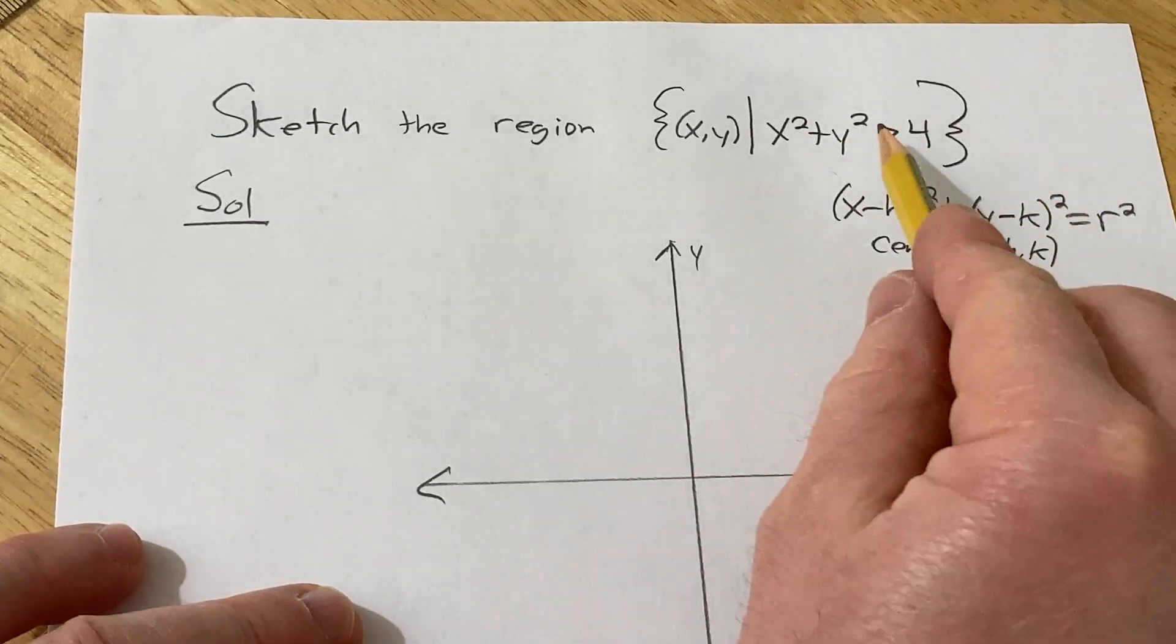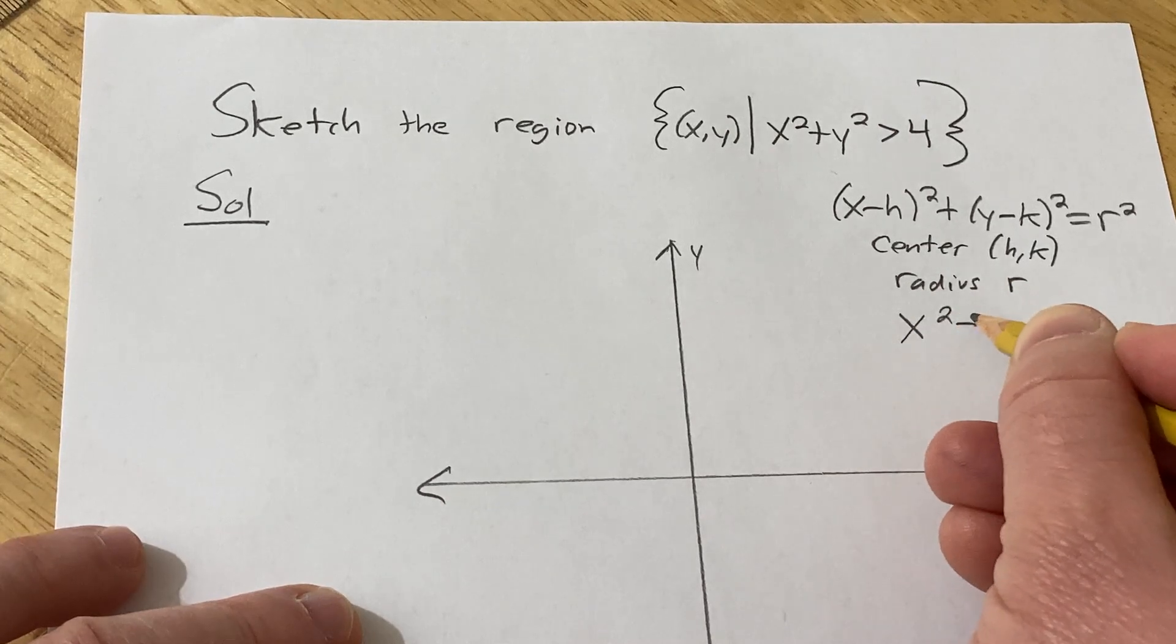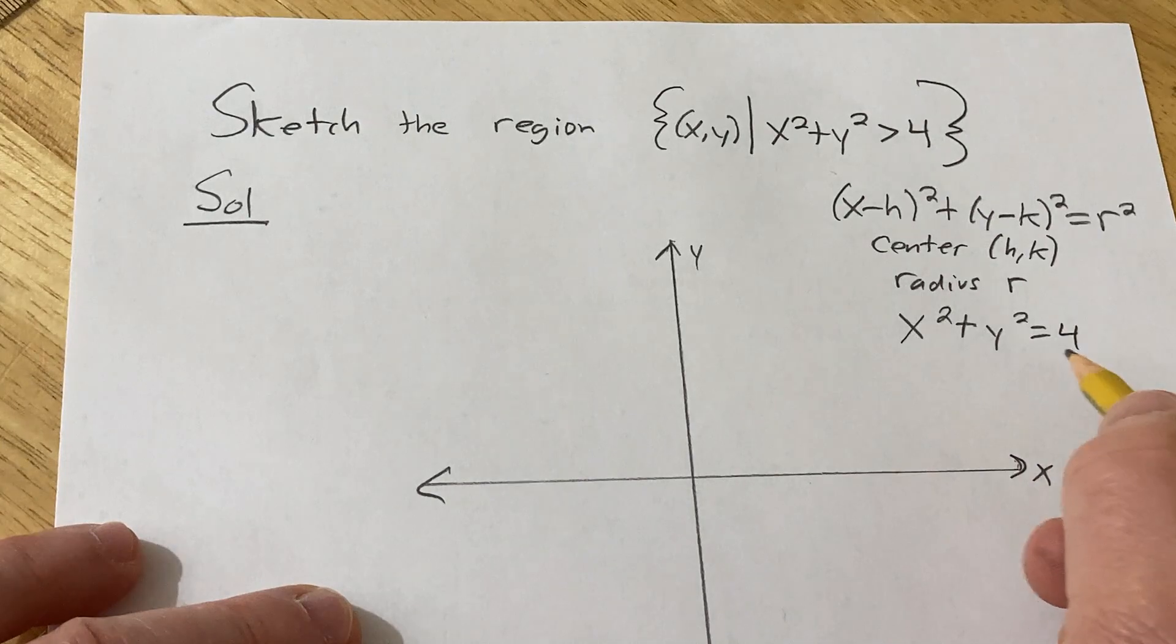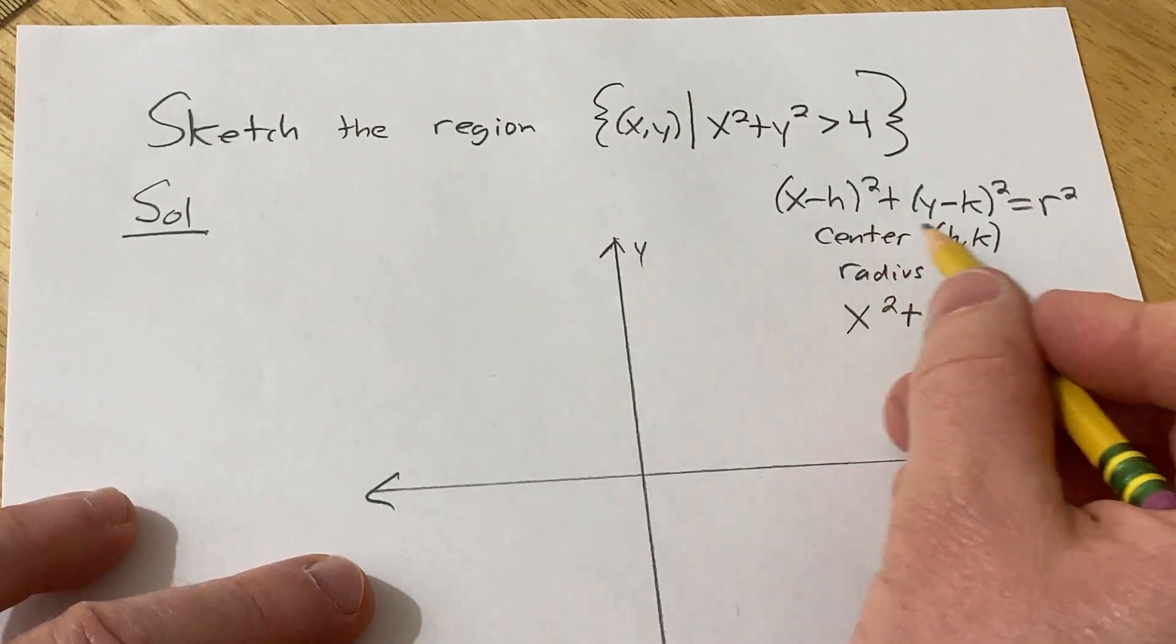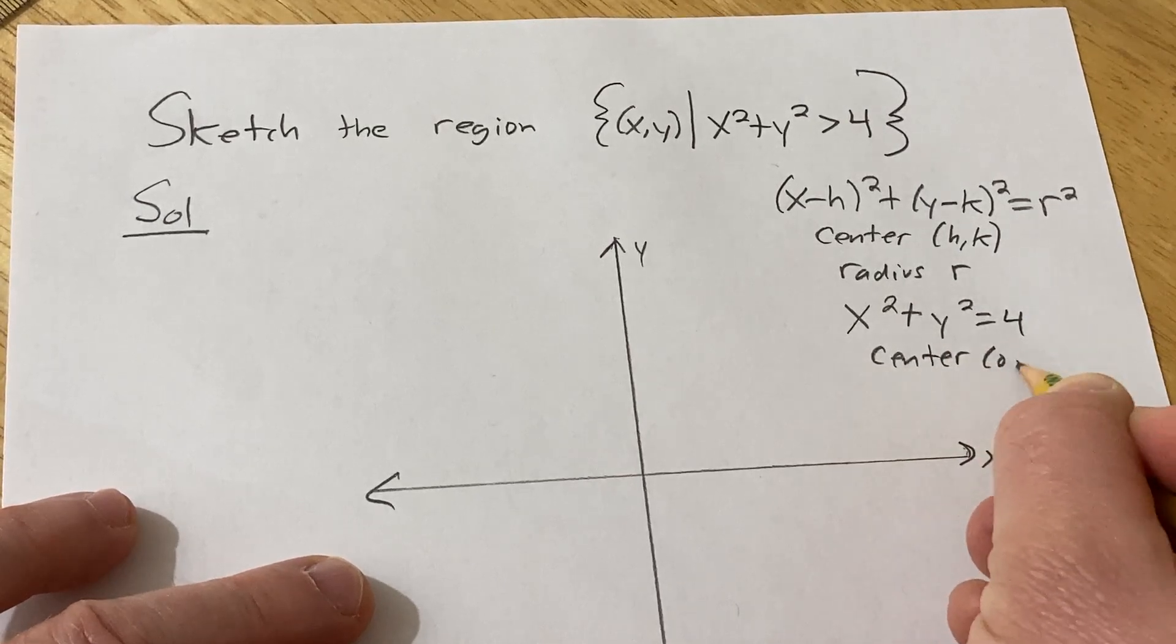So if you look at this, if you ignore the less than and just pretend for a moment that it is equal to 4, what you have here is a circle with no h and k, right? So h and k are 0 and 0. So the center is (0, 0).